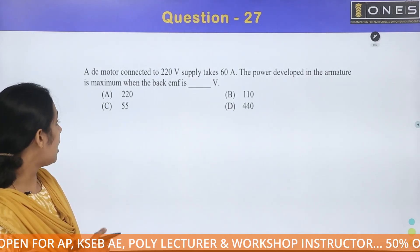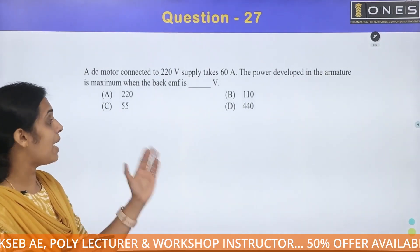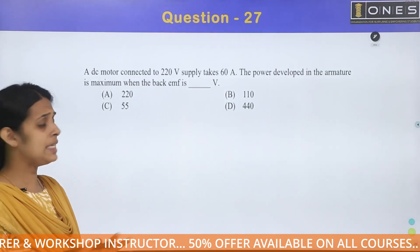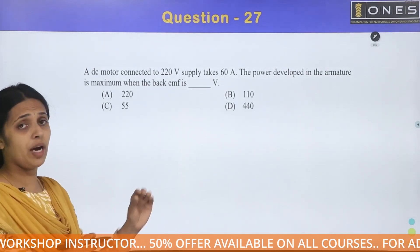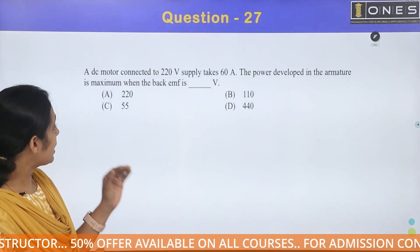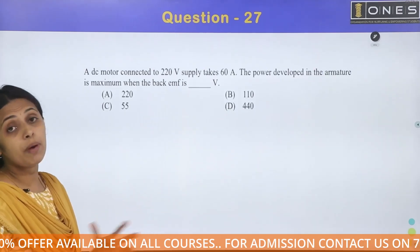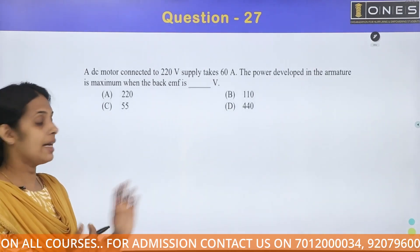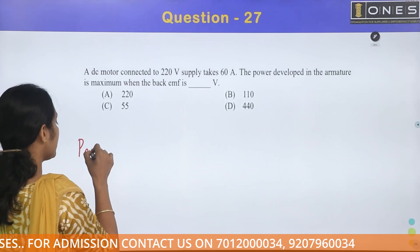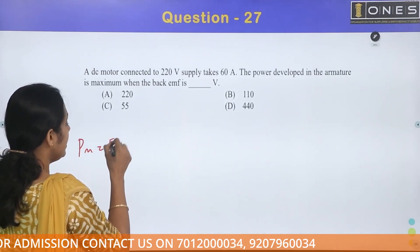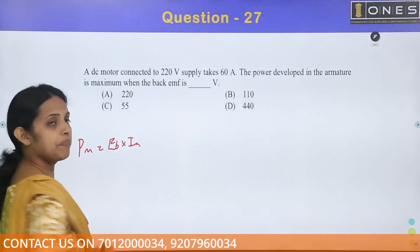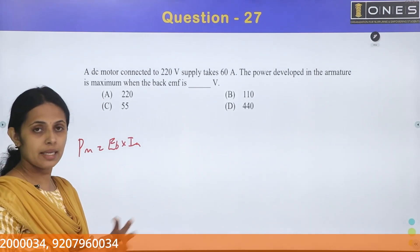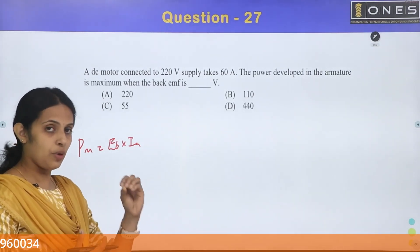Next problem: A DC motor connected to a 220V supply takes 60A. The power developed in the armature is maximum when the back EMF equals a certain value. For maximum power developed in a DC motor, we need to know about Eb × Ia.